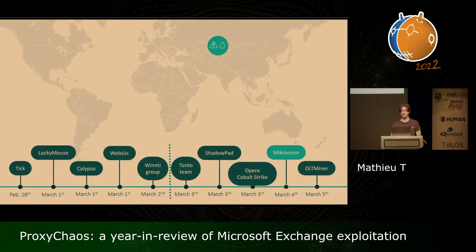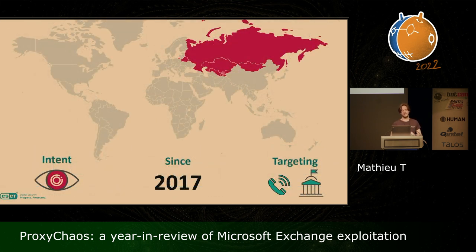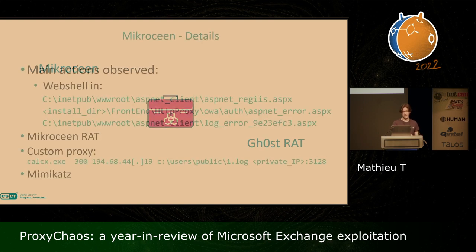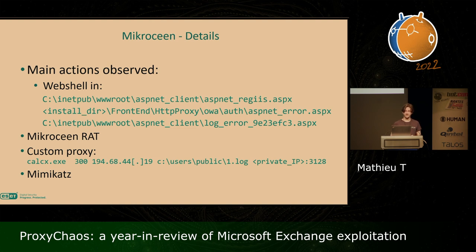On March 4th, we observed the Microsene APT group starting to exploit the vulnerability and compromising the Exchange server of a utility company in Central Asia. Microsene is a cyber espionage group active since 2017, also known as Six Little Monkeys. They mainly target governmental institutions and telecommunication operators in Central Asia, Russia, and Mongolia. Their arsenal includes the Microsene backdoor but also the Ghost RAT. On the compromised mail server, they used different file names, and they tried to deploy the Microsene RAT and also a custom proxy named calcx.exe.